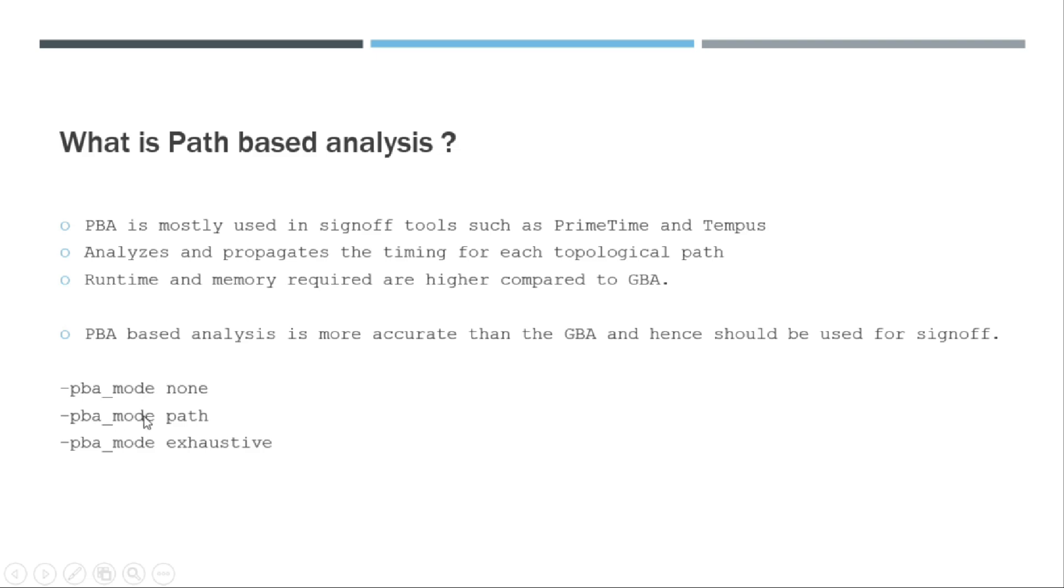So the PBA mode path basically represents that, let's say we report using report_timing and max_paths 100. So to get those 100 paths, it actually uses GBA to do the initial calculation of getting the worst paths.